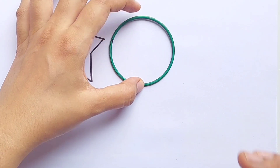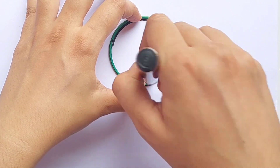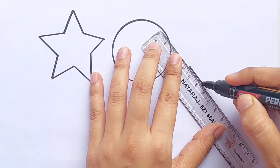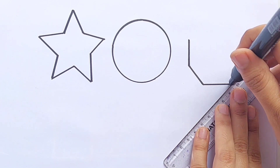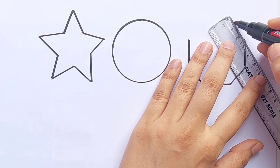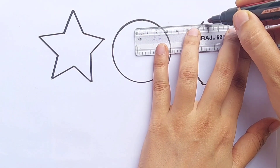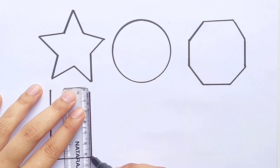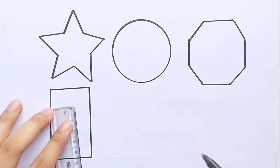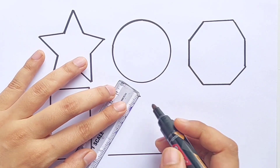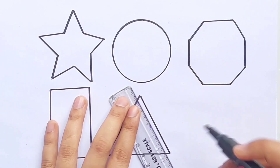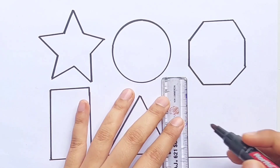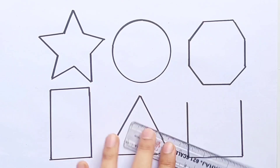Star. Circle. Octagon. Rectangle. Triangle. Square.